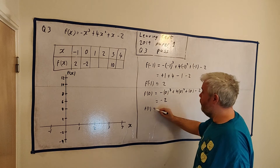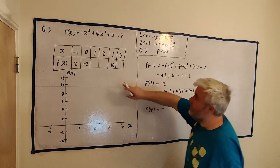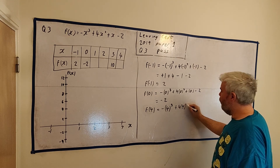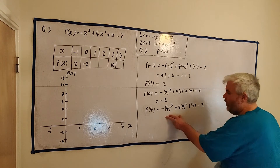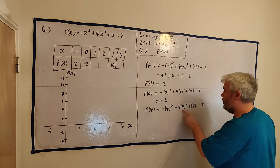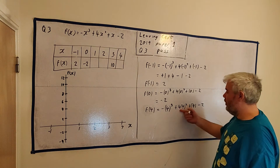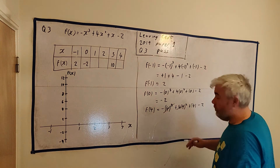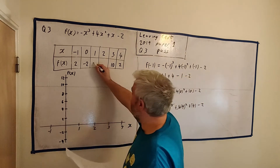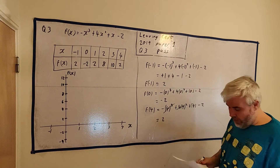Let's do a harder one — we'll do x equals 4. f(4) equals minus 4 cubed plus 4 times 4 squared plus 4 minus 2. You'll probably need a calculator for 4 to the power of 3, which is 64. Working through it all, the answer comes out as 2. And if you put x equals 1 in, it also comes out as 2; if you put x equals 2 in, it comes out as 8. So that fills the table. You've already got plenty of marks.